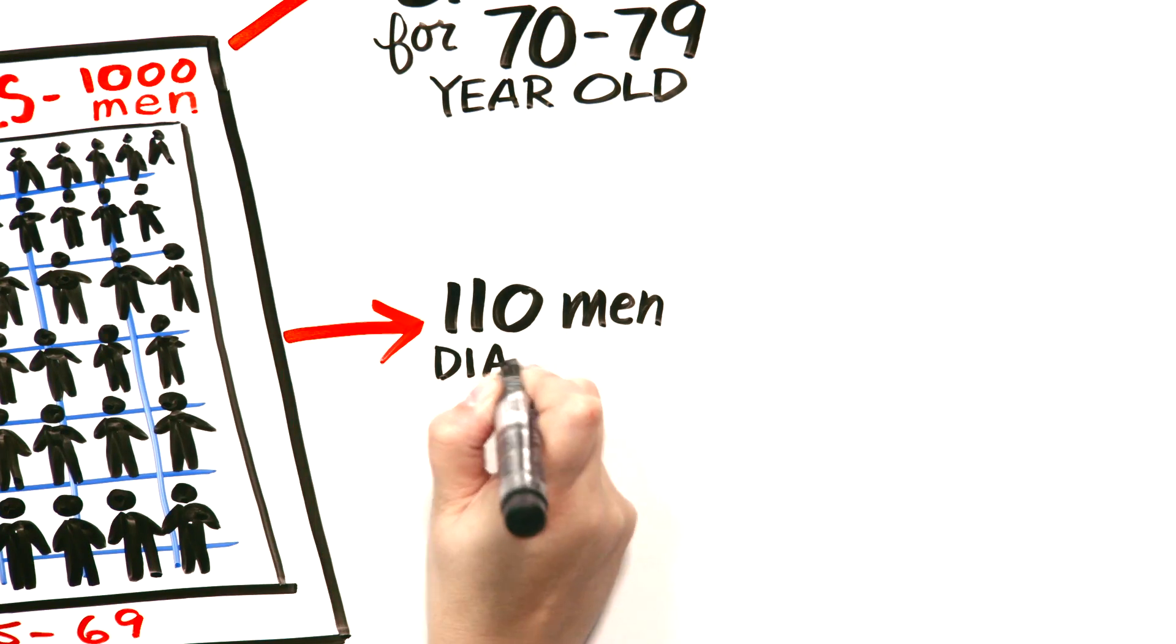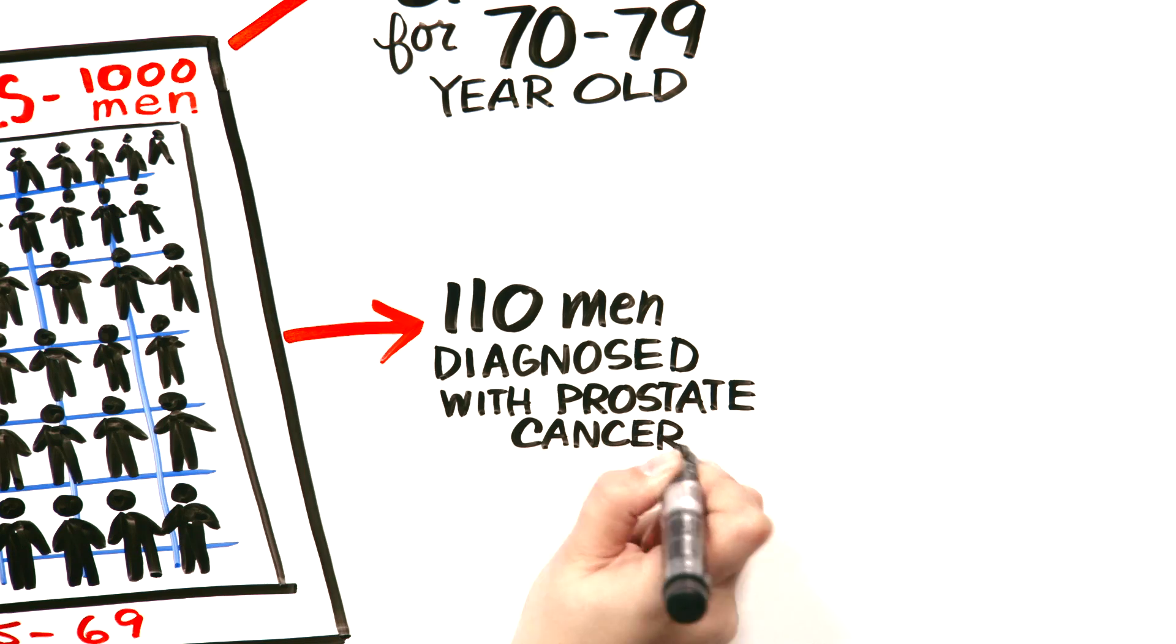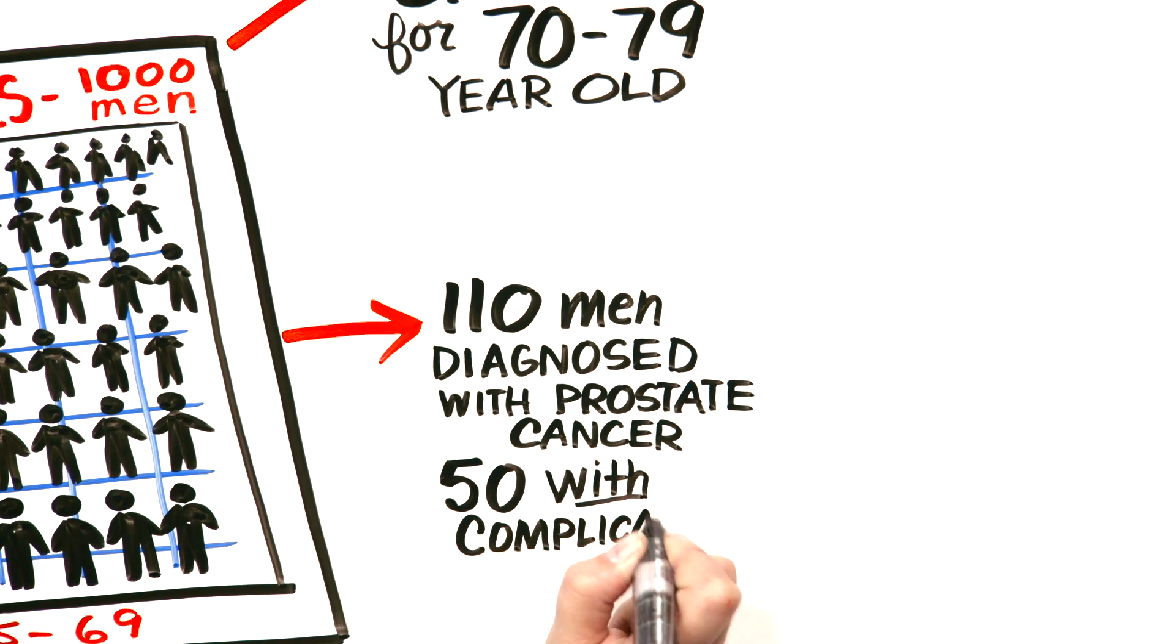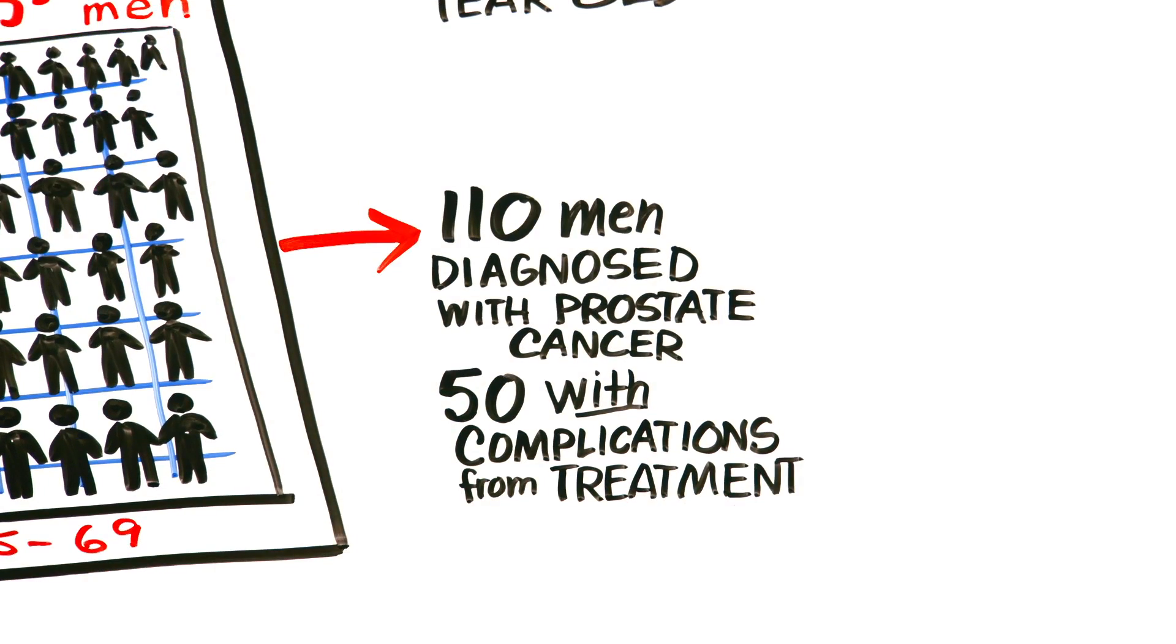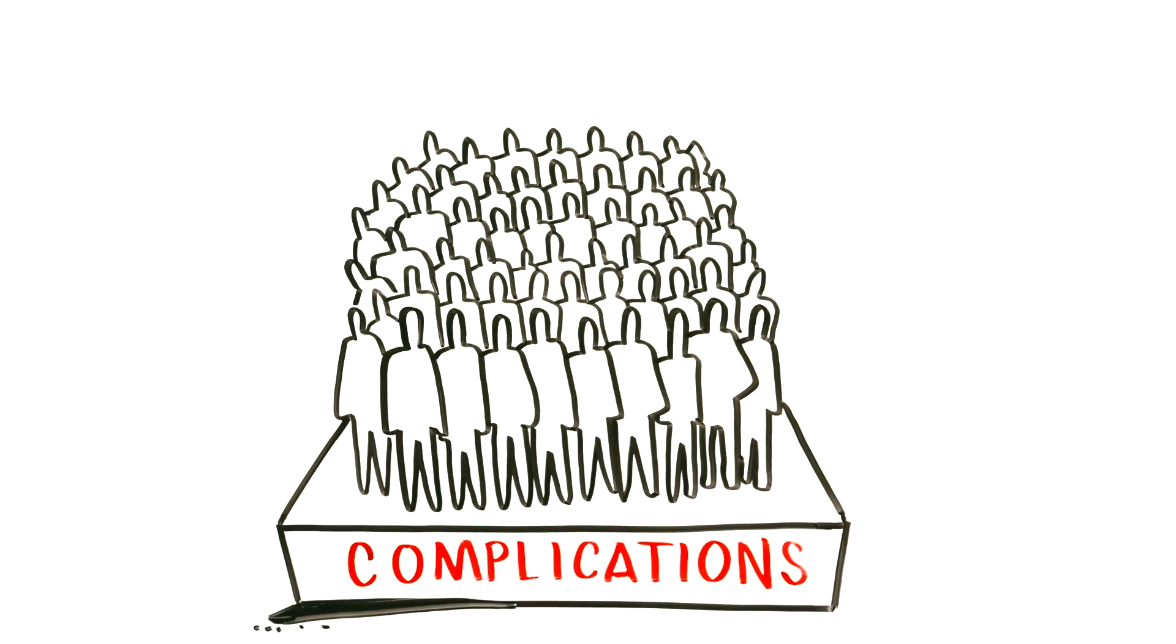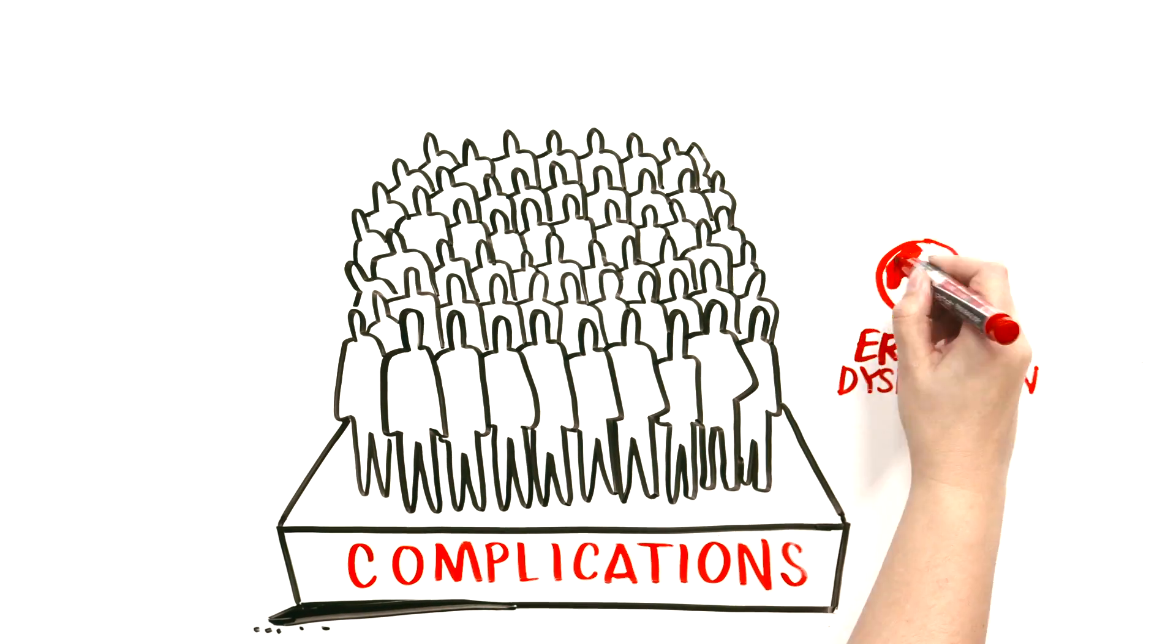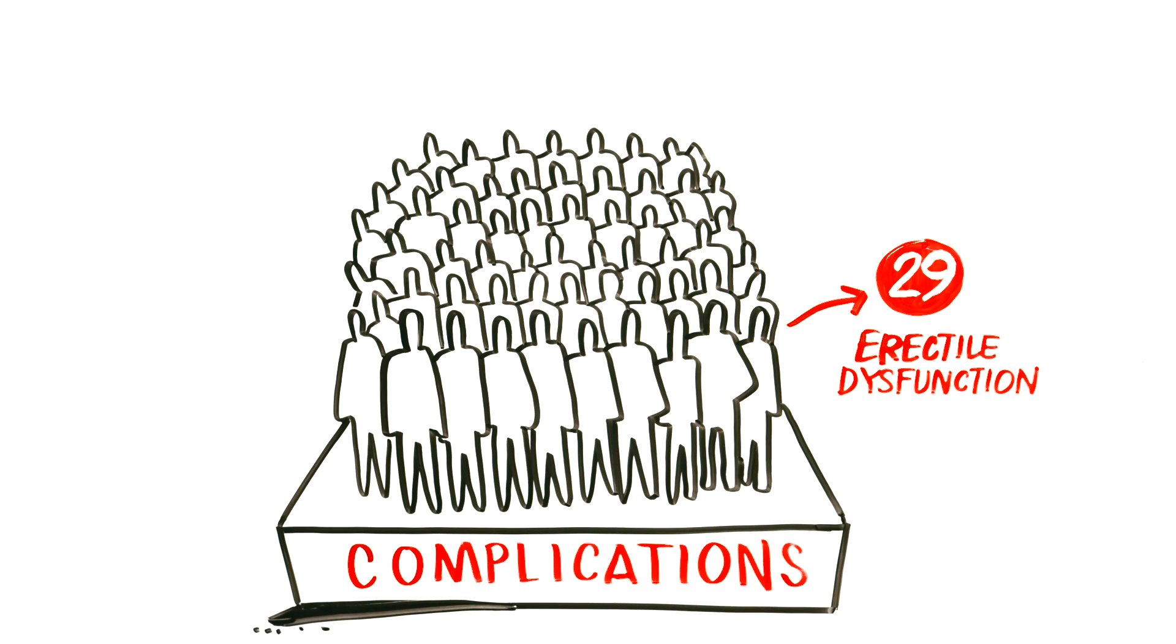110 men would be diagnosed with prostate cancer. If treated, about 50 of these men would have had a complication from treatment, which is usually surgery or radiation therapy. So, for example, erectile dysfunction in at least 29 men, and likely more depending on how you define ED.